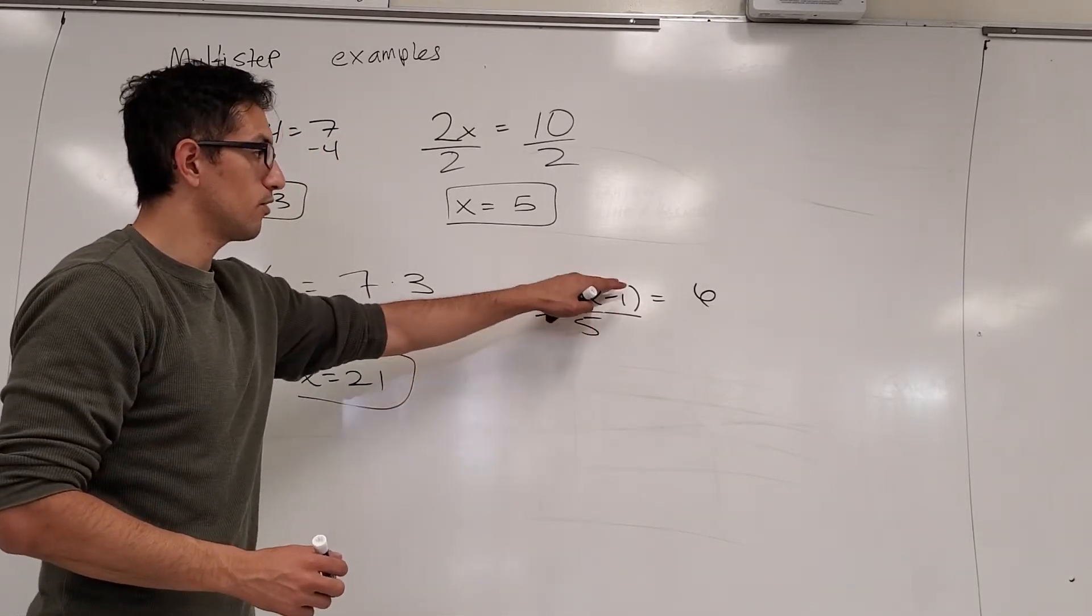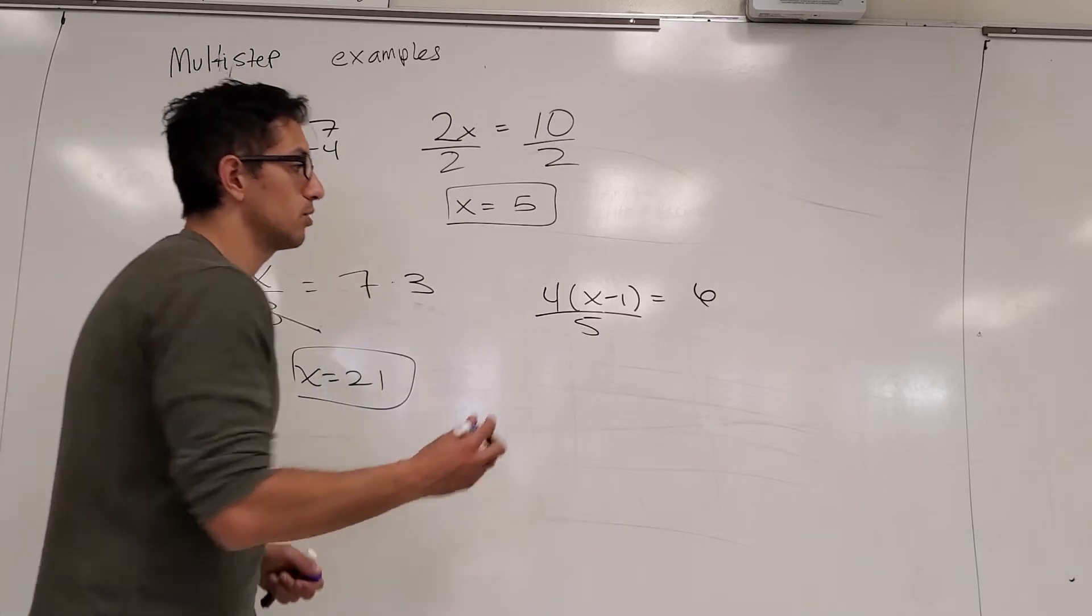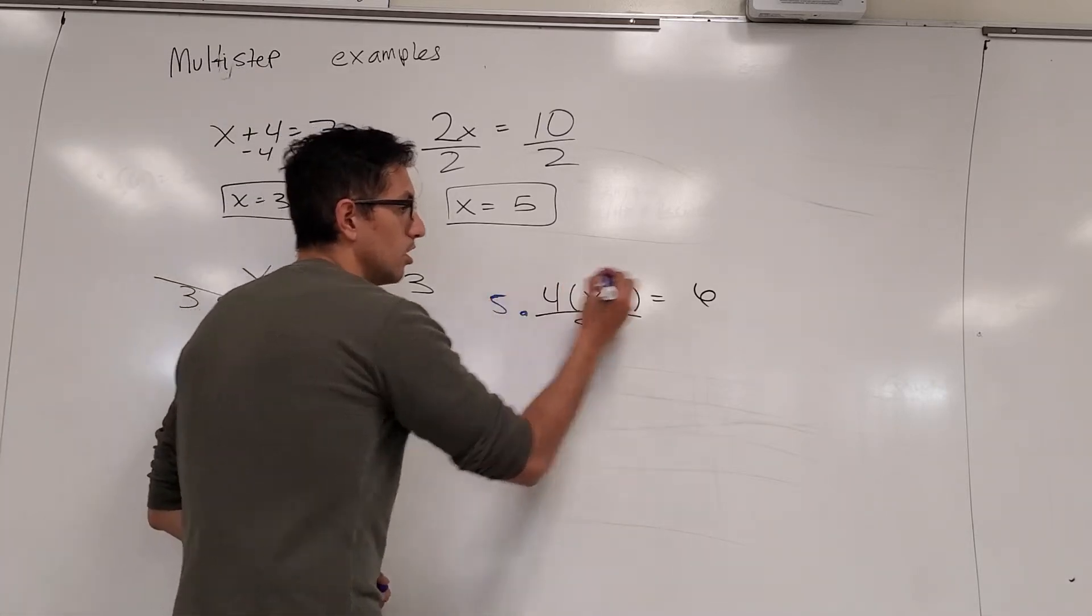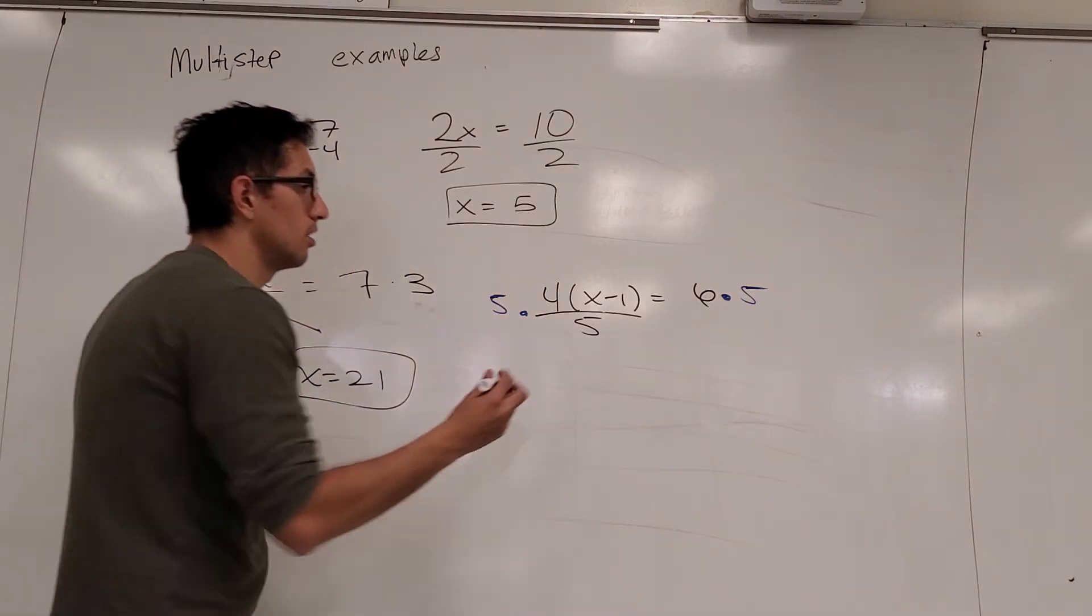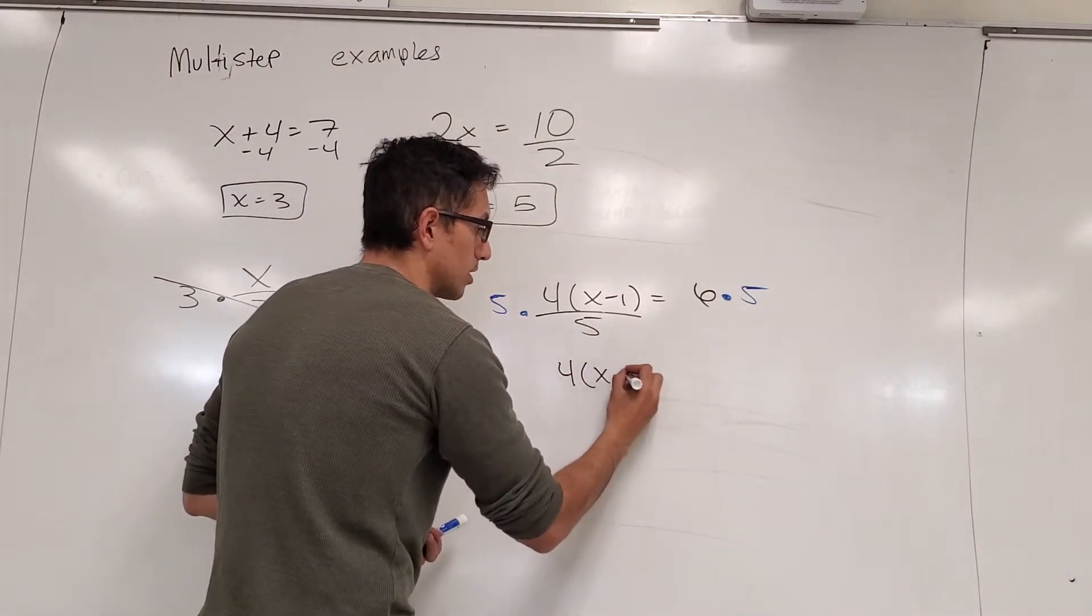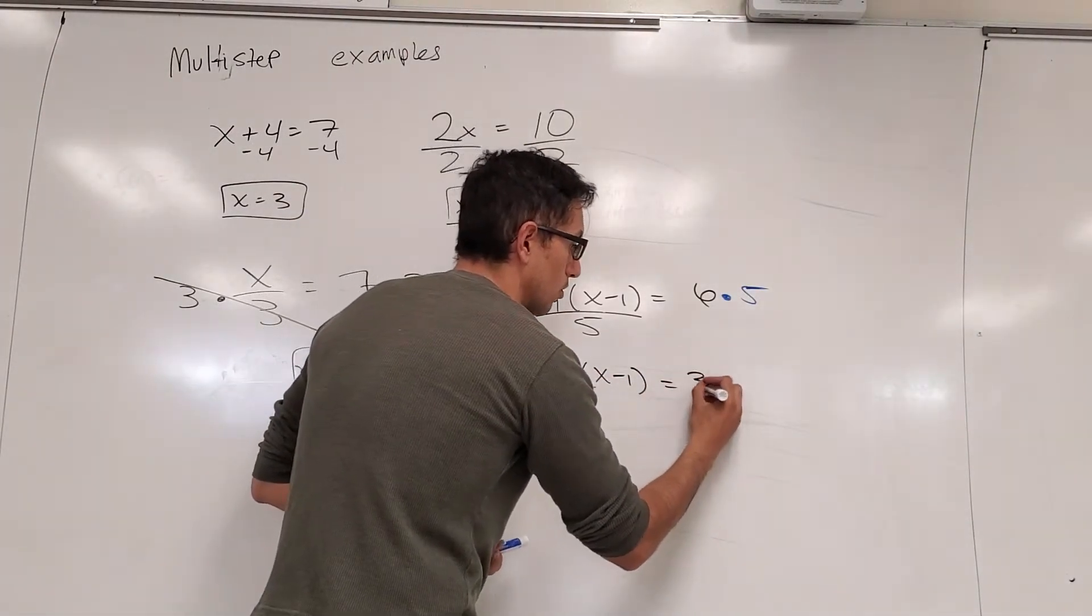First thing we have to do is, since we're dividing this whole thing by 5, we want to cancel that out. So we multiply both sides by 5. And we get 4x minus 1 equals 30.